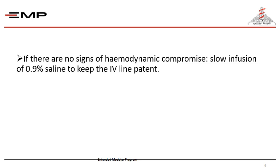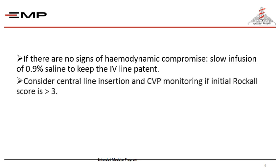If there are no signs of hemodynamic compromise, a slow infusion of 0.9% saline is used to keep the IV line patent, because we may need it at any time. If bleeding continues and becomes more severe and the patient becomes hemodynamically unstable, we consider central line insertion and CVP monitoring.